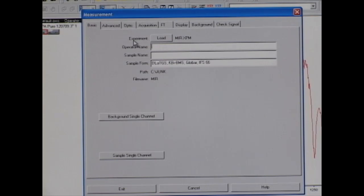We're going to enter the operator's name, the sample name—in this case, Octadecyl Phosphonic Acid—and after that, we're going to click on Advanced.